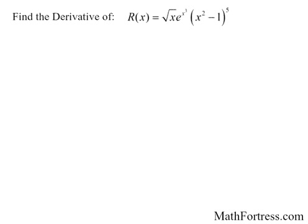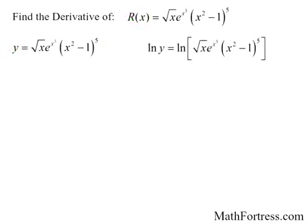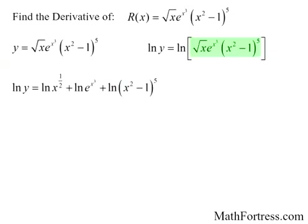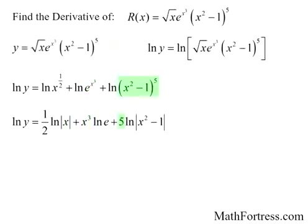Find the derivative of r of x equals the square root of x times e raised to the power of x cubed times the quantity x squared minus 1 raised to the power of 5. We replace r of x with y, take the natural logarithm of both sides, and use the properties of logarithms to rewrite the product of three functions as a sum of logarithms. We rewrite the square root of x as x to the 1 half, bring down the 1 half, and take the absolute value of x. We bring down x cubed for the second term and bring down 5 for the third term. Since the natural logarithm of e equals 1, the second term simplifies to x cubed.